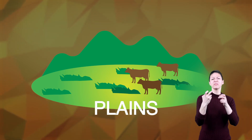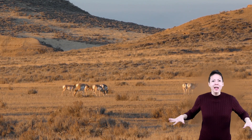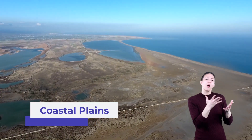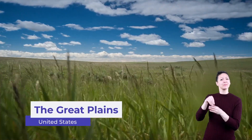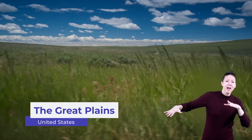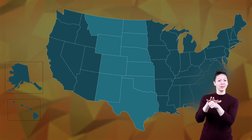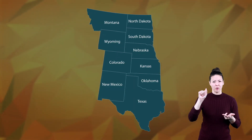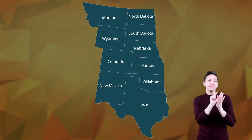Plains are the flat areas on our Earth's surface. Some plains, like the Great Plains, are situated in the middle of land masses. Other plains can be found near the ocean, so we call them coastal plains. The Great Plains are in the United States, spanning across a massive expanse of land. This landform is a huge flat area that makes up the entirety of Kansas, Nebraska, North Dakota, South Dakota, and even parts of six other states.